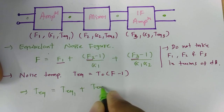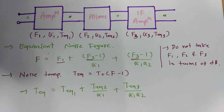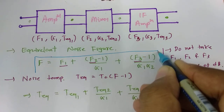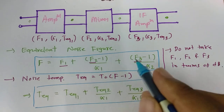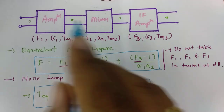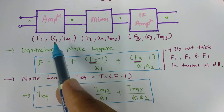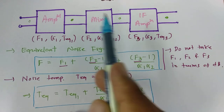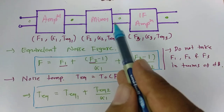The result is: T-equivalent = T-equivalent-1 + T-equivalent-2/G1 + T-equivalent-3/(G1·G2). The second block's noise temperature is divided by G1, and the third block's is divided by G1·G2. For a fourth block, it would be T-equivalent-4/(G1·G2·G3). This is how we calculate equivalent noise temperature for a cascaded communication system.